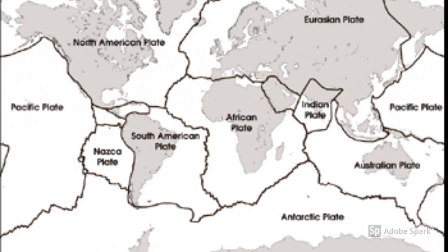The crust, or lithosphere, is broken up into 15 major pieces or tectonic plates. The most dramatic processes and landscapes on the earth occur near the margins of these plates, where the bumping, grinding, and jostling all occurs.